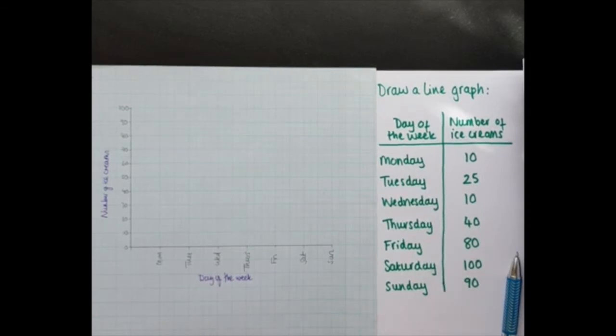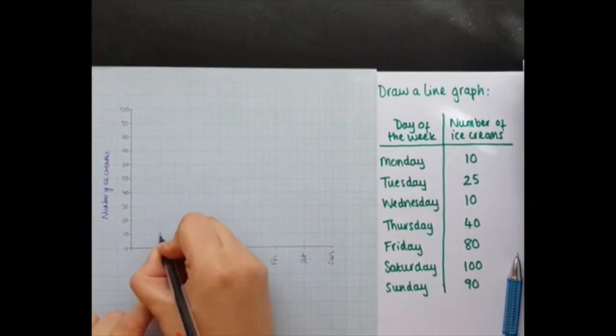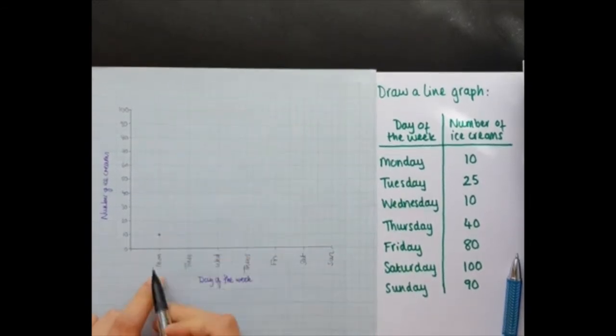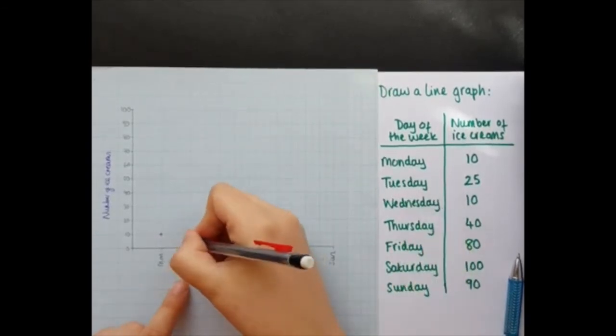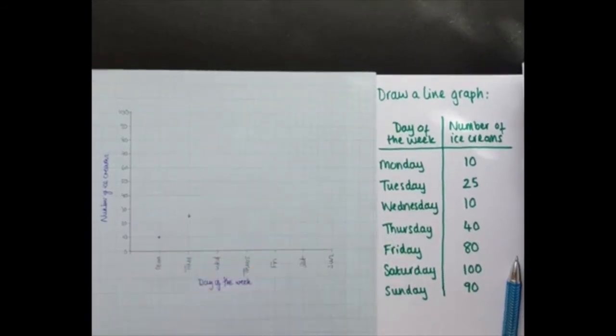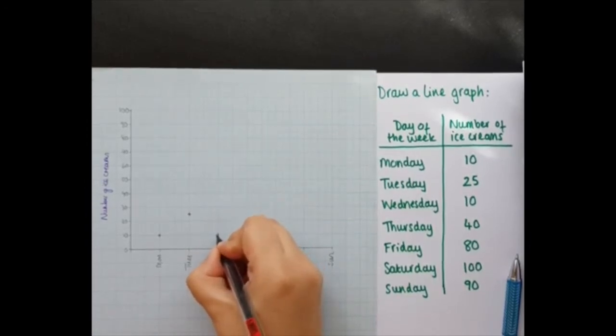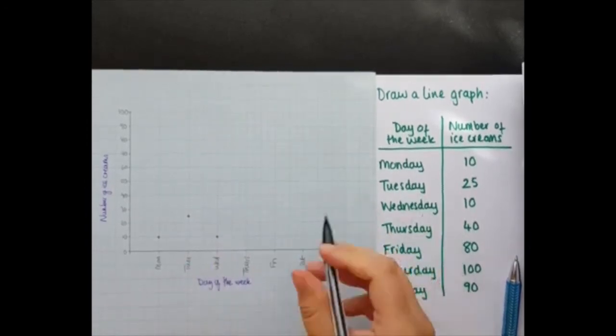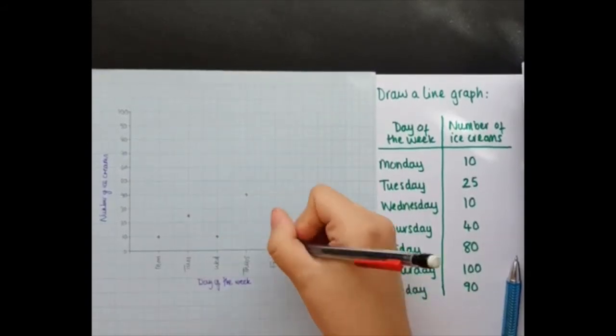Okay, so drawing a line graph. Now what I'm going to do is I'm going to plot these points on this graph as if it were a scatter graph. So for Monday, 10 ice creams were sold, so I'm going to put a little cross for Monday. For Tuesday, 25 ice creams were sold. For Wednesday, 10. Thursday, 40 ice creams were sold. For Friday, 80 were sold.